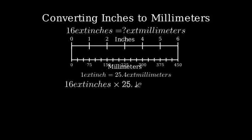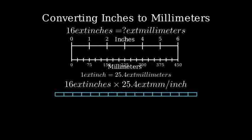To convert 16 inches to millimeters, we multiply 16 by our conversion factor of 25.4. Let's visualize what this means. Each inch is 25.4 millimeters long. So 16 inches would be 16 times that amount.